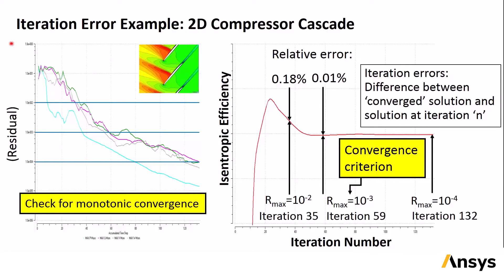This is an example investigating iteration error in the simulation of flow in a 2D compressor cascade. The objective of the simulation is to determine the isentropic efficiency of the compressor using CFD. Pressure contours are shown in the image superimposed over the residuals plot. As the simulation proceeds, the residuals are plotted every iteration, as seen on the left, and the isentropic efficiency is also plotted every iteration, as seen on the right.